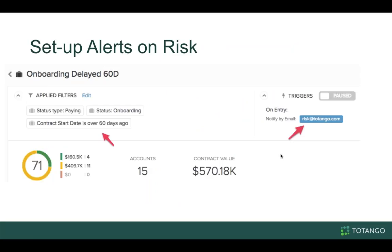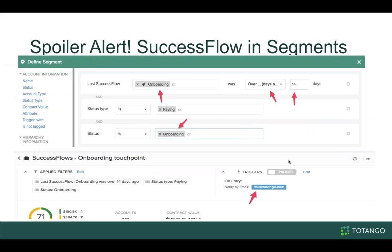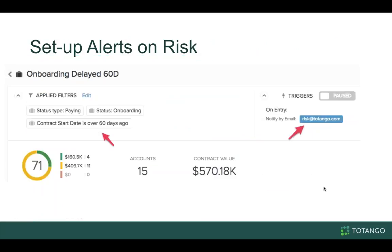Alerting is also critical. You can set up a segment — for example, if onboarding is delayed past 60 days with contract start date over 60 days — and use Totango's trigger mechanism to alert by email. There's an example of risk@totango.com, but it can be any internal email you use. Whenever a customer enters the delayed phase past 60 days, an email goes to the inboxes of the designated individuals so you're alerted in real time.